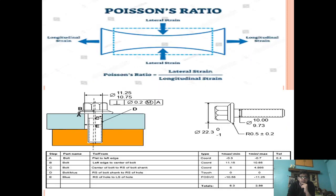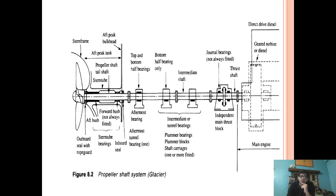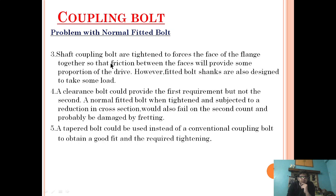We came up with a third option: the taper section coupling bolt as an alternative. It not only provides a good interference fit, it also enables easier machining, and it does not cause over-stressing and does not involve any cooling. To a certain extent it is a successful solution. Soft coupling bolts are also tightened to force the faces of the flange together so that friction between the faces provides some proportion of the drive.